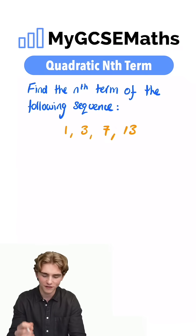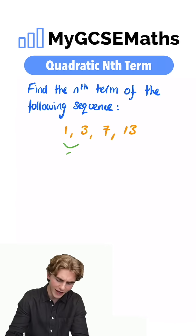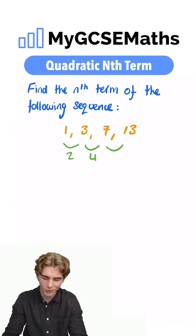The first step is going to be to find the first difference. To get from 1 to 3, we add 2. To get from 3 to 7, we add 4. To get from 7 to 13, we add 6.